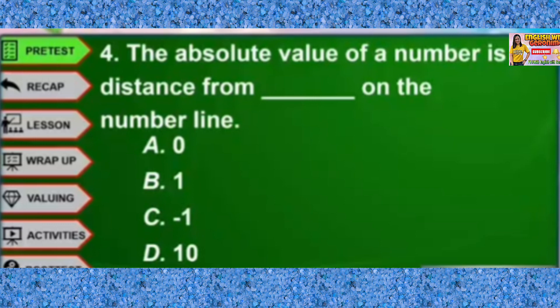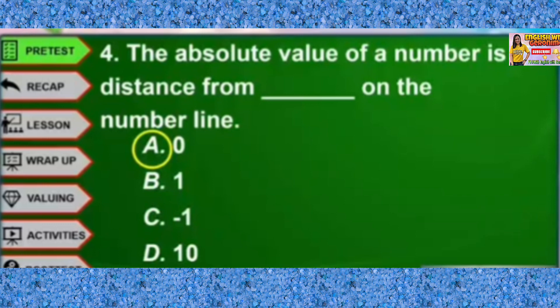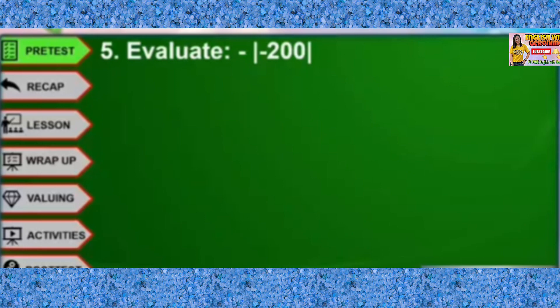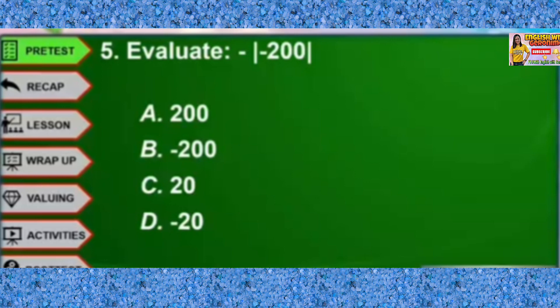The answer is A. Zero. Number 5. Evaluate negative absolute value of negative 200. A. Positive 200. B. Negative 200. C. 20. D. Negative 20. The answer is B. Negative 200.